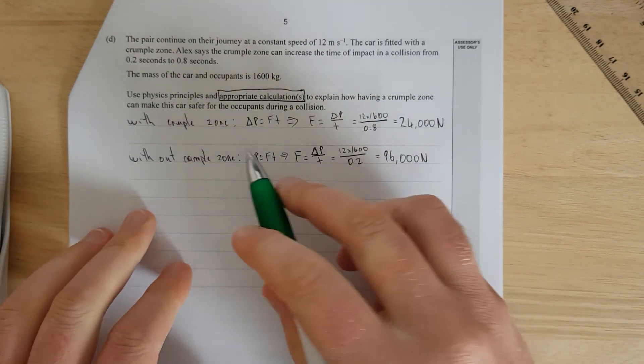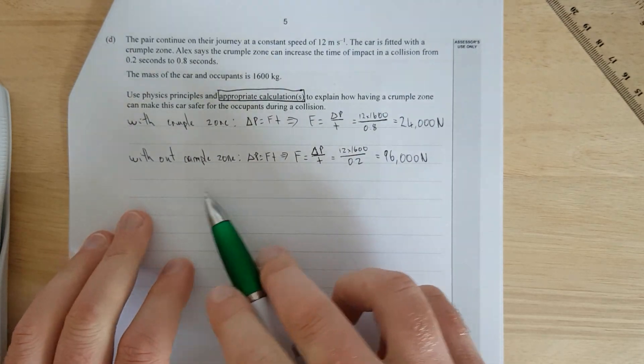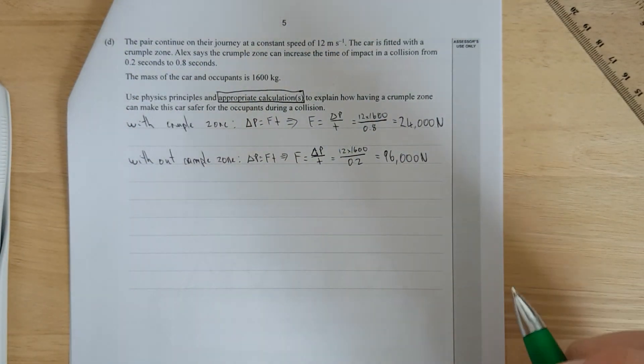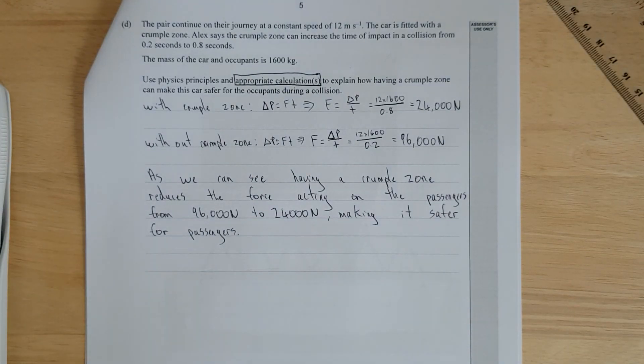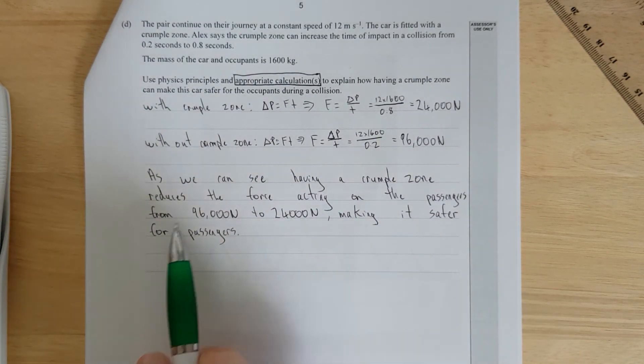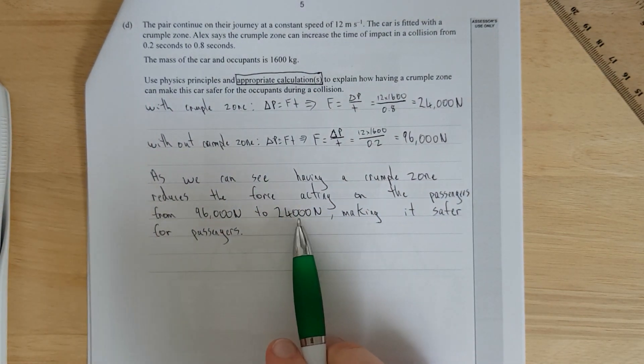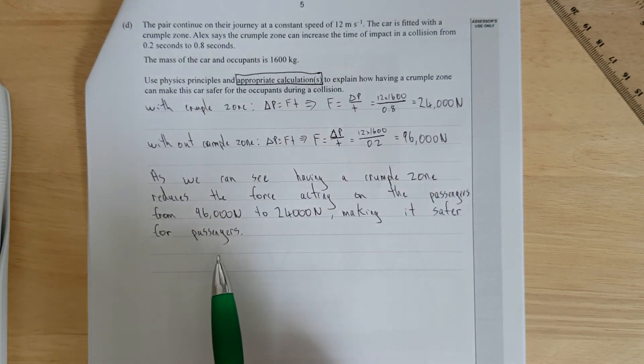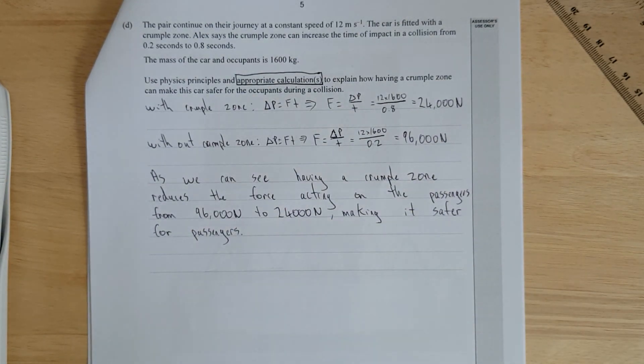Right, so we should probably finish it off. I'll just pause and write out a wordy answer, and then discuss. Right, so I've said, as we can see, having a crumple zone reduces the force acting on the passengers from 96,000 newtons to 24,000 newtons, making it safer for the passengers. And that's it.